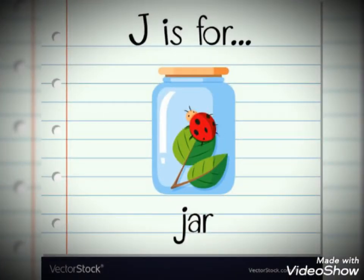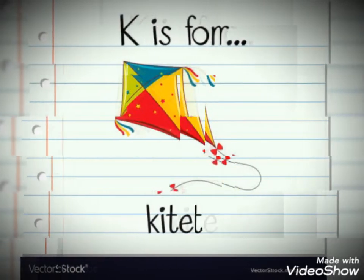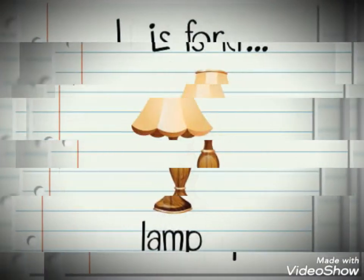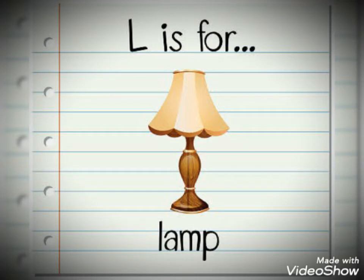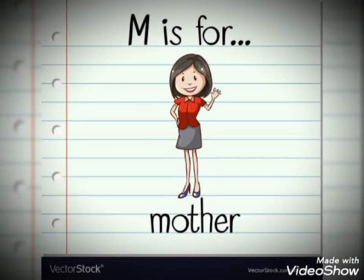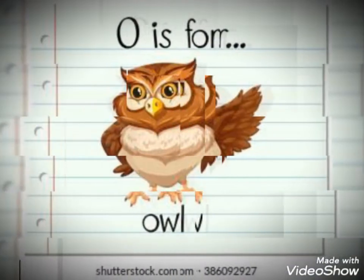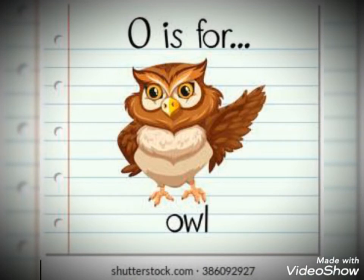J is for jar. K is for kite. L is for lamp. M is for mother. N is for nest. O is for owl.